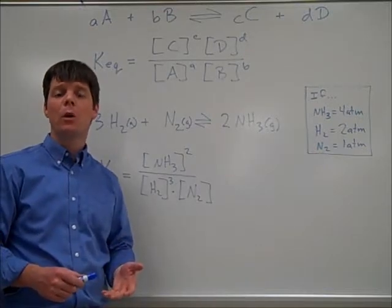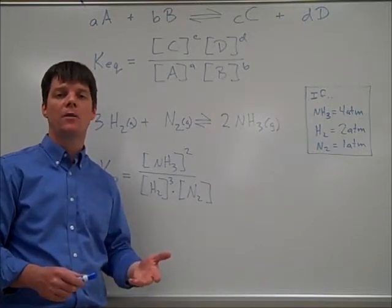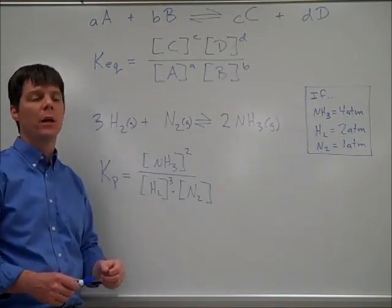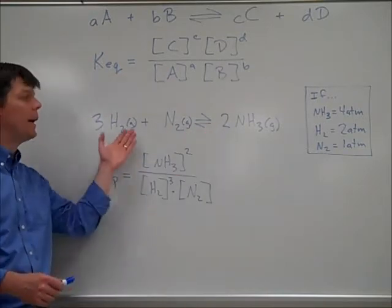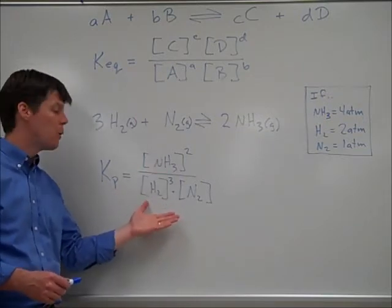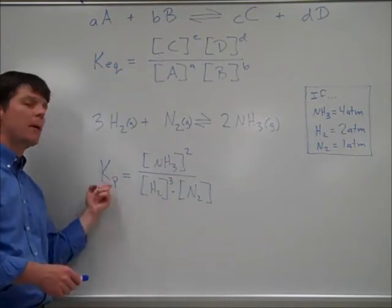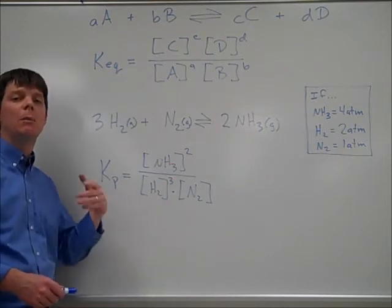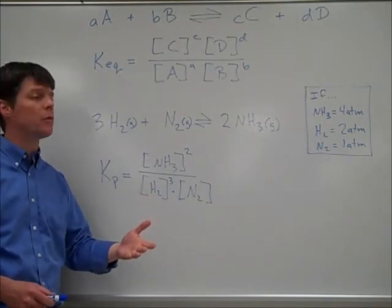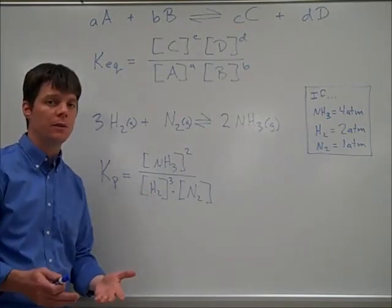In this video we'll use an equilibrium expression to calculate an equilibrium constant. The reaction we'll consider is the production of ammonia from hydrogen and nitrogen gas. We've previously worked through the process of calculating a KEQ. This time I'm going to write this as KP because we're going to be considering the pressures of the three gases involved in this reaction.